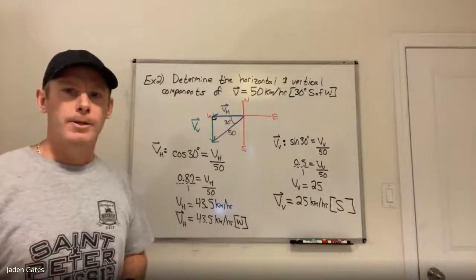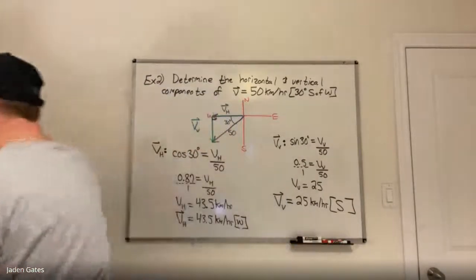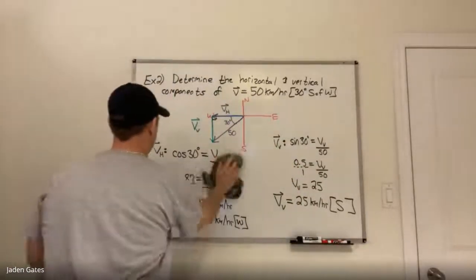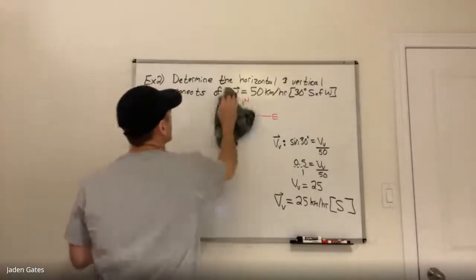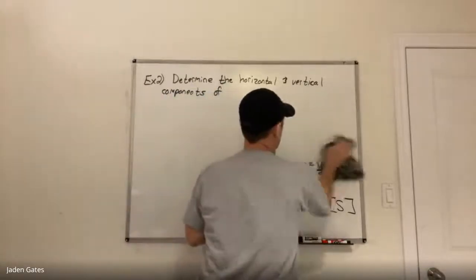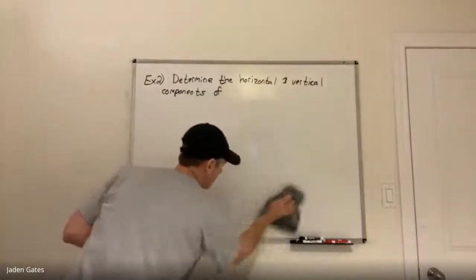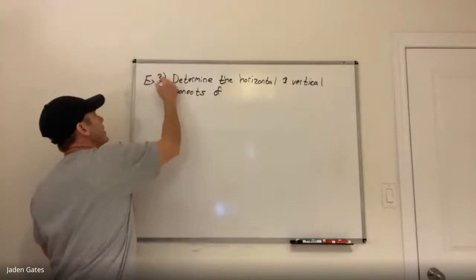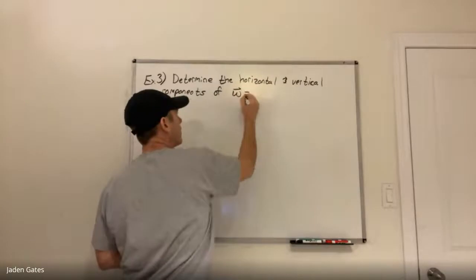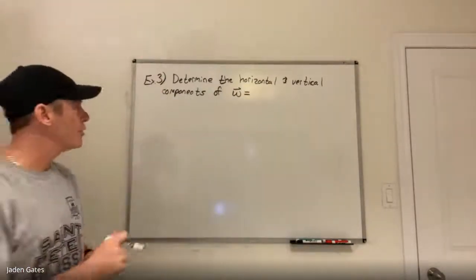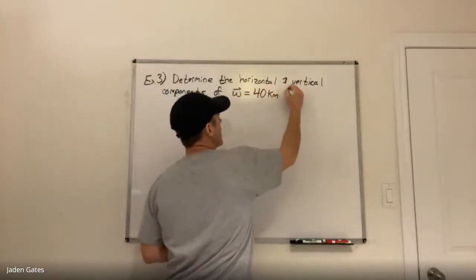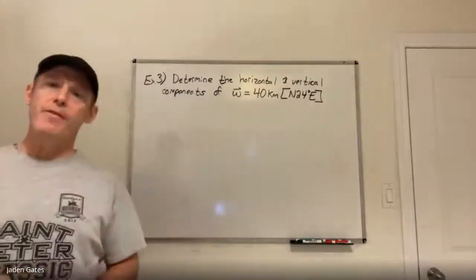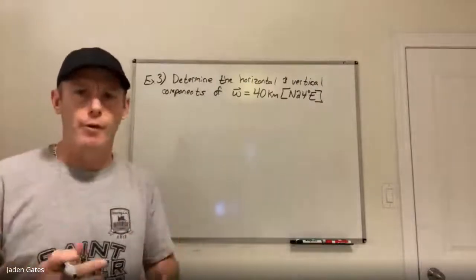Any questions so far? I'm going to do one more of those, a little bit differently though, same idea. Let's get rid of example two — I'm going to do the same thing here for example three. Here's our vector: I'm going to call it vector W — a W with an arrow over top; the arrow is telling you it's a vector. Let's go with 40 kilometers, north 24 degrees east.